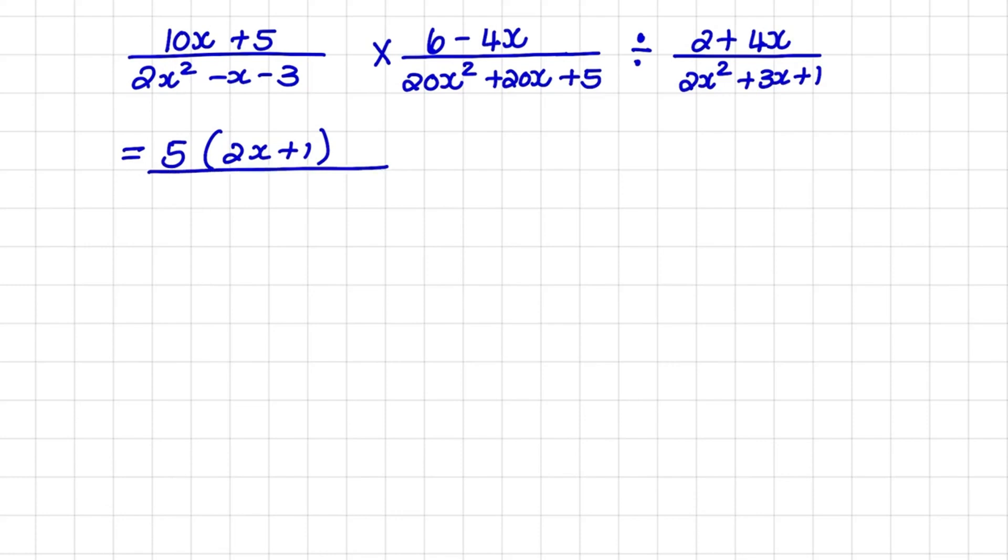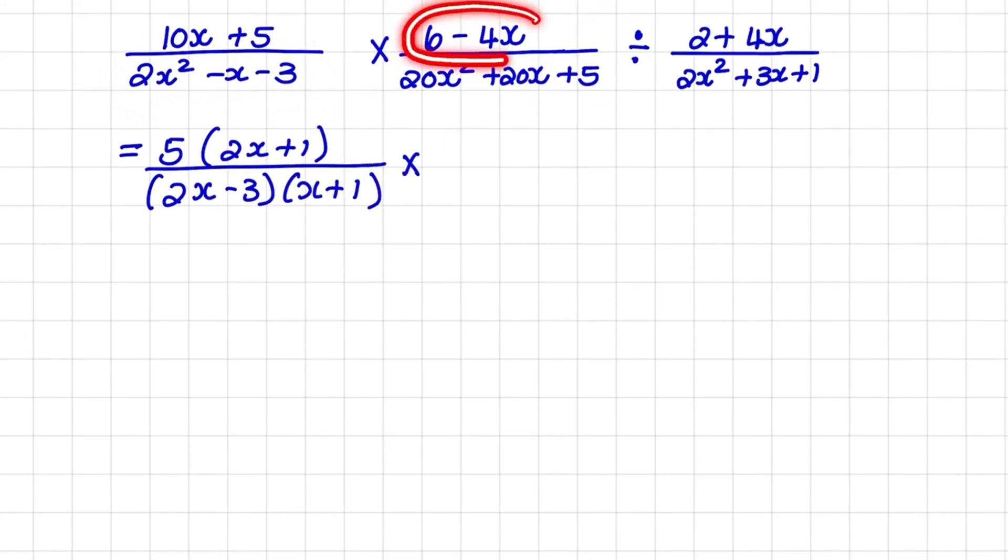In the denominator, I have 2x squared minus x minus 3, but when you factorize this trinomial, it will lead to 2x minus 3 times x plus 1. So in our second algebraic fraction,